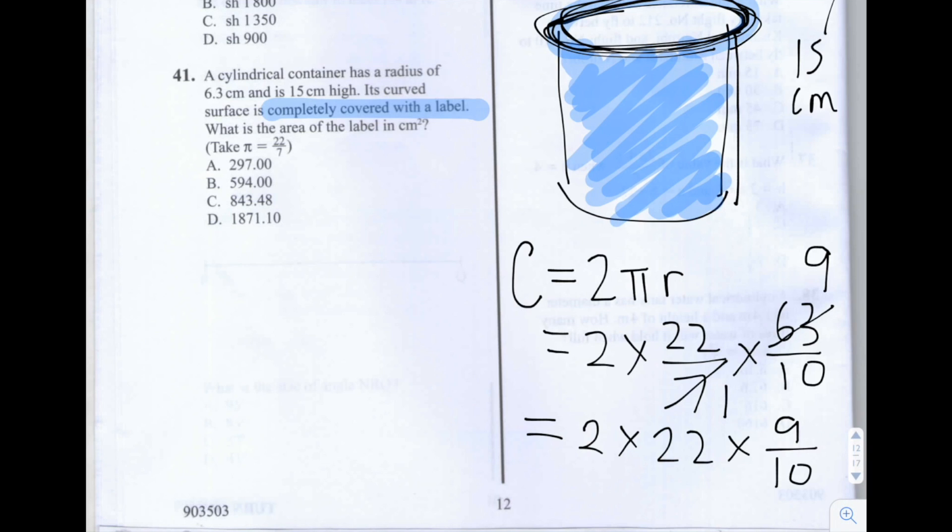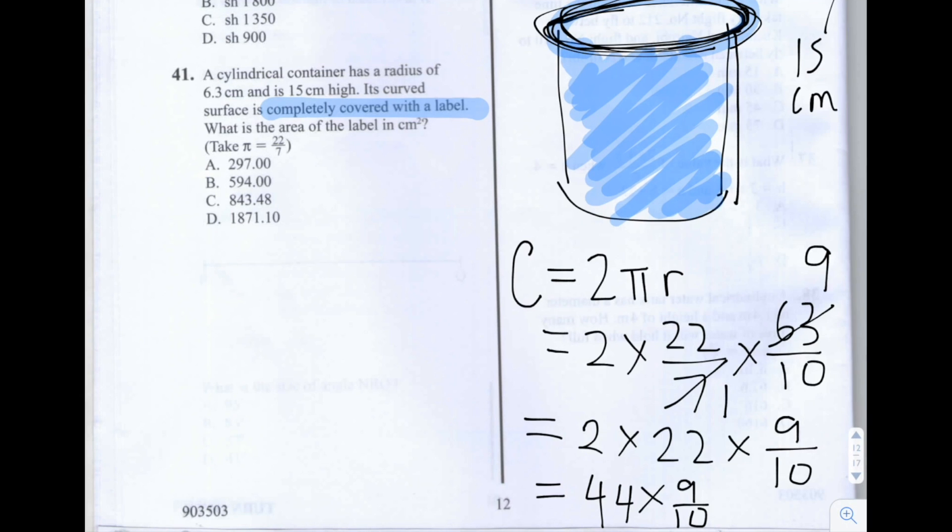2 times 22 is 44. So we have 44 times 9 over 10. So what I would do next is multiply 44 by 9. And then the circumference is just 44 times 9, the answer we get for that all over 10.